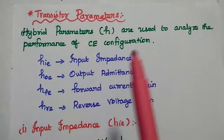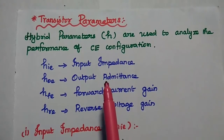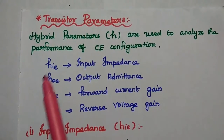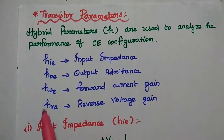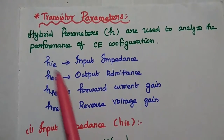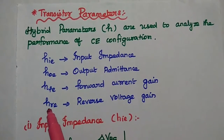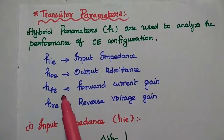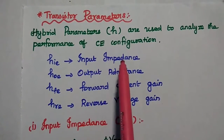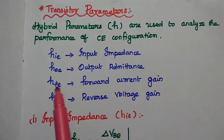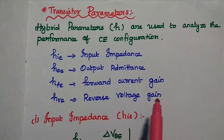Hybrid parameters or H parameters are used to analyze the performance of CE configuration. There are four parameters: HIE, HOE, HFE, and HRE. Here, I represents input, O represents output, F represents forward, R represents reverse, and E represents common emitter configuration. HIE means input impedance, HOE means output admittance, HFE means forward current gain, and HRE means reverse voltage gain.